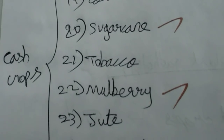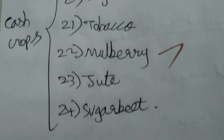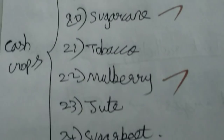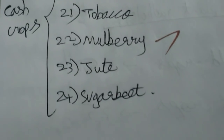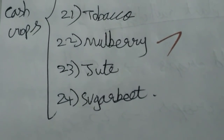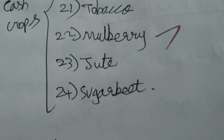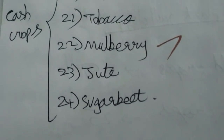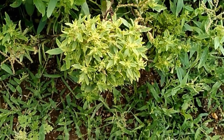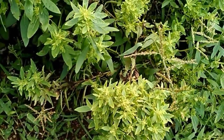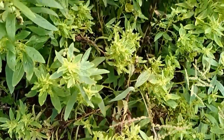We will also see cash crops: cotton, mulberry, sweet potato, and sugarcane. These are all the cash crops. Now we will see the diseases of field crops — we will never collect herbarium without knowing these.